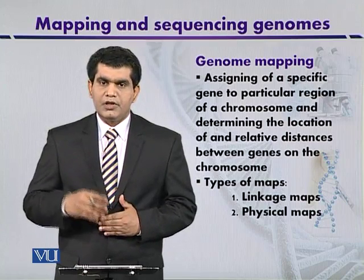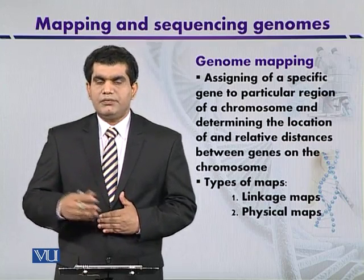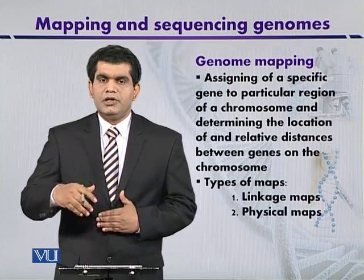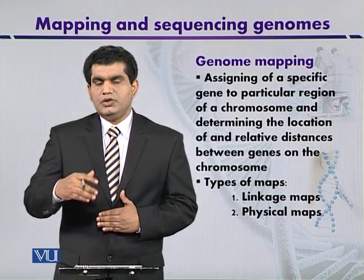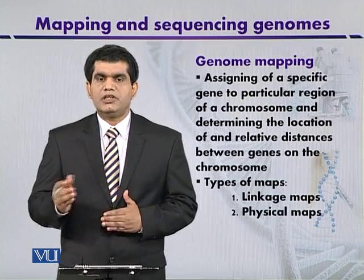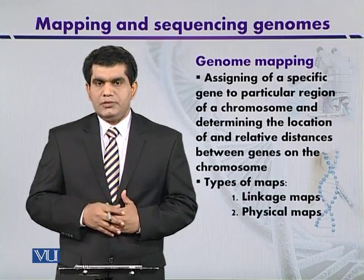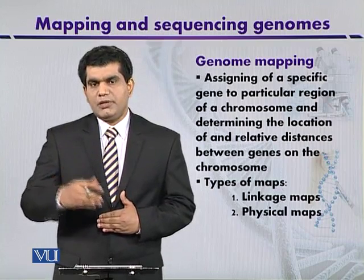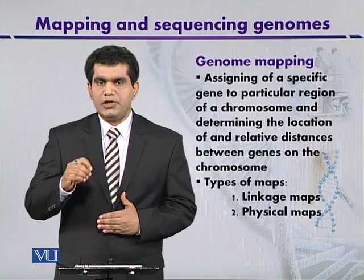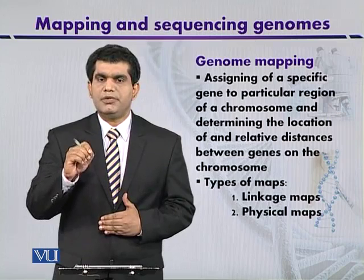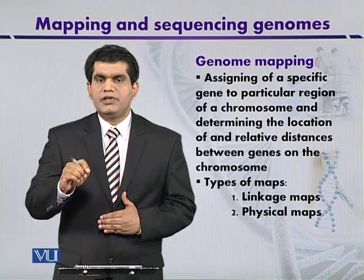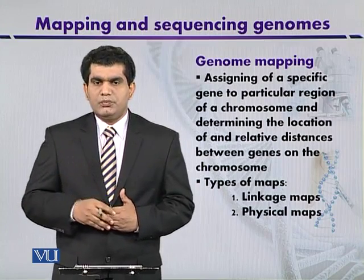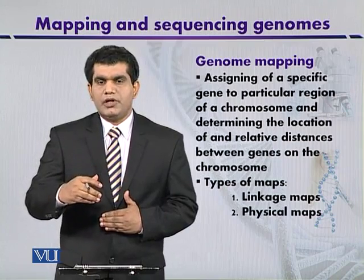Genome mapping has two major types: linkage mapping and physical mapping. In linkage mapping, we demonstrate what the order of genes is and what the relative distances between them are. On the other hand, in physical mapping, we can exactly pinpoint the locations of a gene, and the distances among different genes can also be calculated in terms of the number of nucleotide bases.